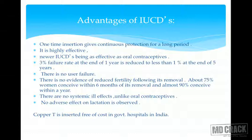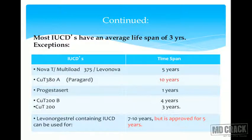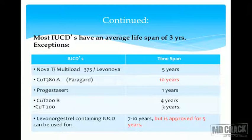Most IUCDs have an average lifespan of three years. I've made a table especially to help you remember the different lifespans. Multiload 375, which is commonly used, has a lifespan of five years — MCQs can be asked on this. Copper T 380A has a lifespan of 10 years — this MCQ has already been asked. Progesta-cert has a life of one year.